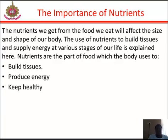The nutrients we get from the food we eat will affect the size and shape of our body. Nutrients are the parts of food which the body uses to build tissues, produce energy, and keep us healthy. For example, a person who weighs 50 kg consists of 31 kg of water, 9 kg of protein, 7 kg of fat, and 3 kg of minerals. Therefore, besides water, the most important nutrient is protein. Fat is also important to build cells and energy stores. Some minerals are important — for example, calcium, which is necessary to build bones and teeth, and iron, which helps us to build hemoglobin in the body.